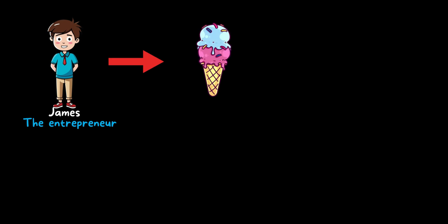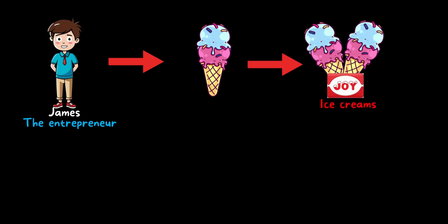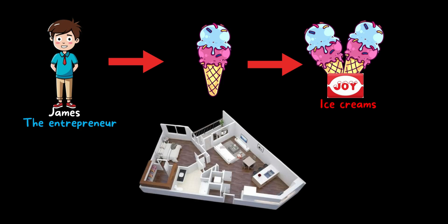This is James, and he is an entrepreneur who is very much interested in ice creams and wanted to start an ice cream business. He created his own company called Joy Ice Creams, initially a home-based company. He purchased a computer for his office usage, then recruited one assistant and purchased another computer. To connect them, he purchased one network switch and connected both computers to it.